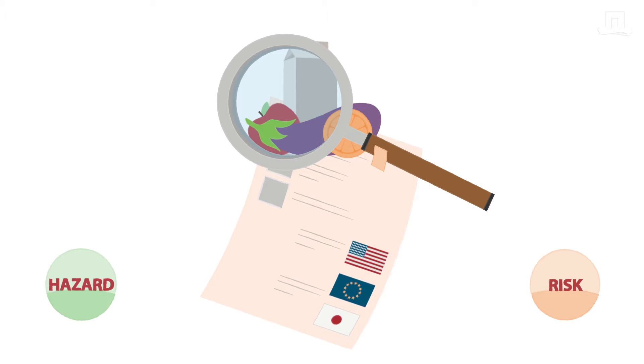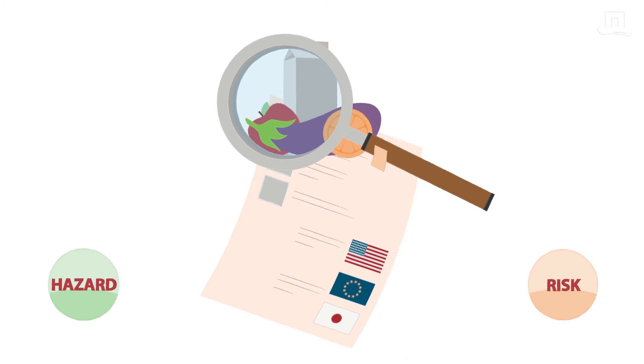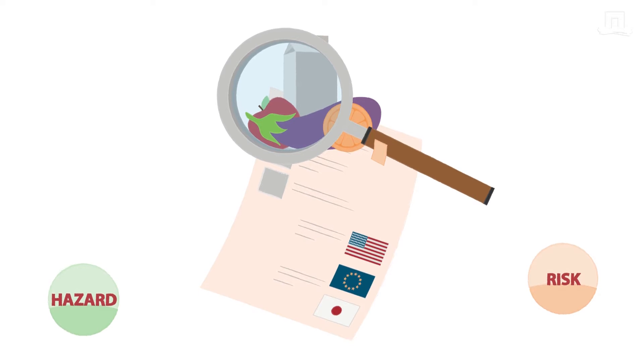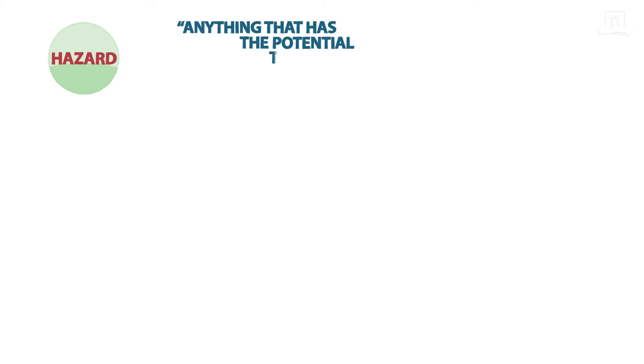The terms hazard and risk are often used interchangeably, but their meanings are very different. If you want to understand health risks associated with food, you need to understand the difference between a hazard and a risk. A hazard is defined as anything that has the potential to cause harm.